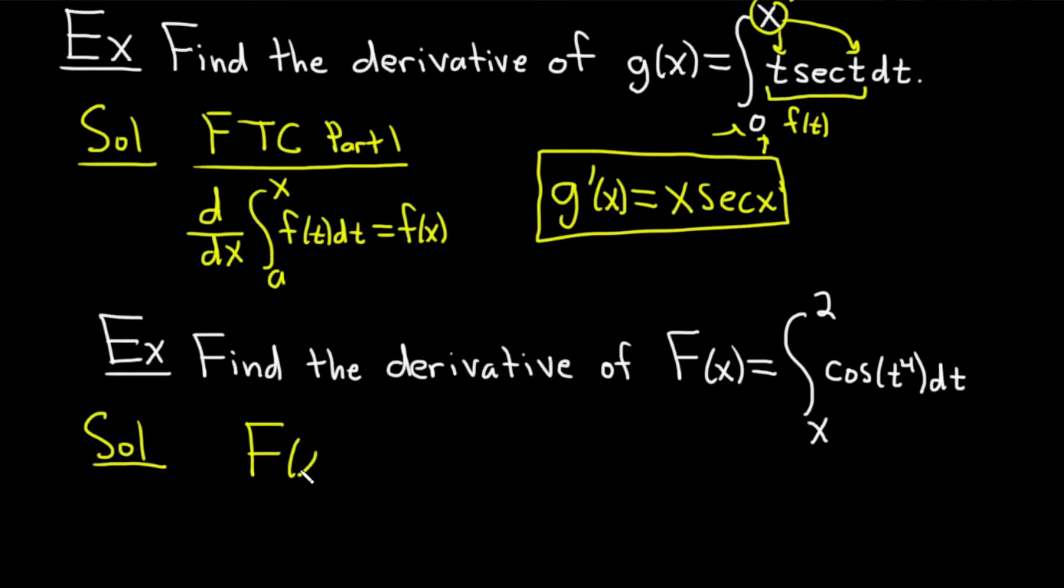Recall that you're allowed to do that as long as you put a negative sign outside the integral. This will be negative and then we can flip the limits of integration. The x is going to go up top and the 2 is going to go on the bottom. And this is cosine of t to the fourth dt.